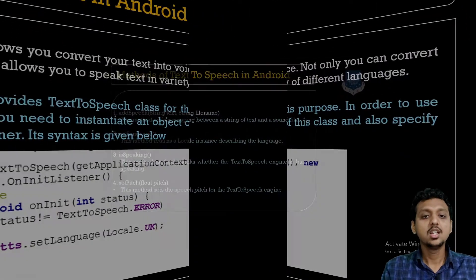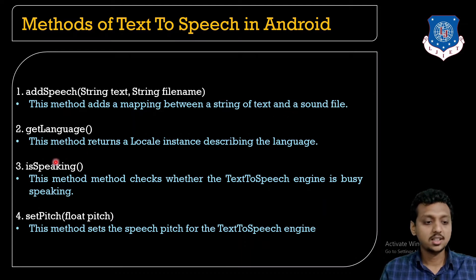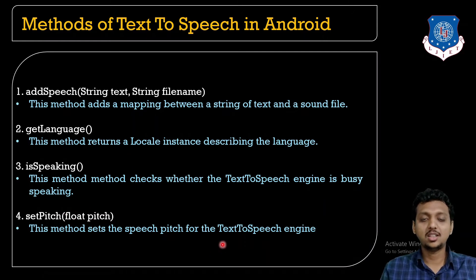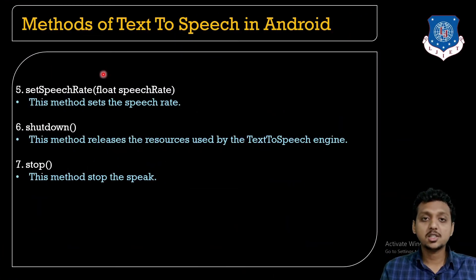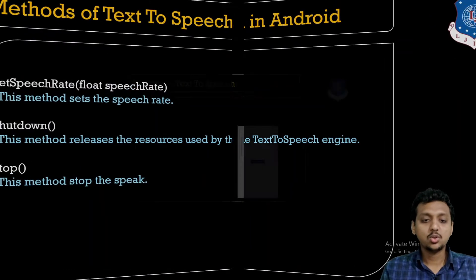Here are some key methods of the TextToSpeech class. addSpeech() takes two parameters — a String text and a String filename — and adds a mapping between a text string and a sound file. getLanguage() returns the locale instance describing the current speaking language. isSpeaking() checks whether the device is currently speaking. setPitch() sets the pitch of the TTS engine. setSpeechRate() sets the speech rate. shutdown() releases the resources used by the TTS engine. stop() stops the speaking process.